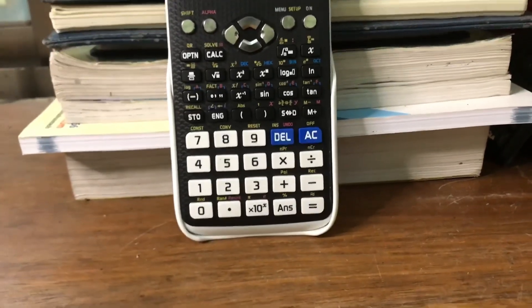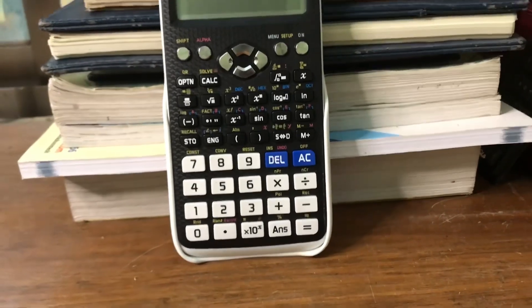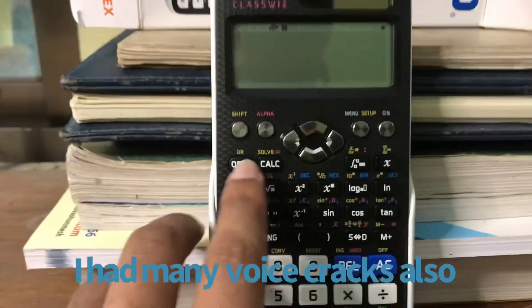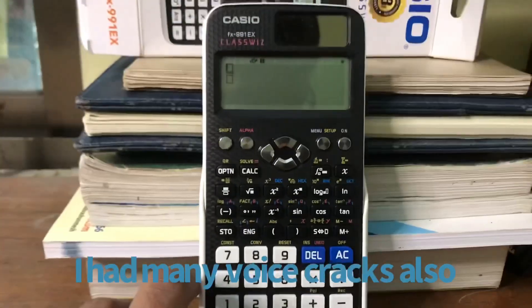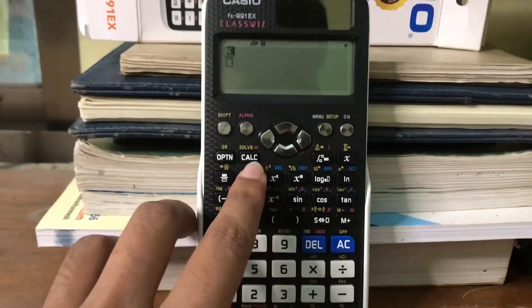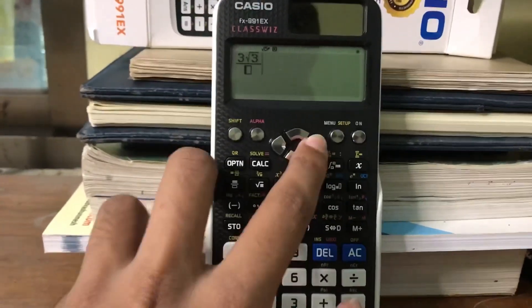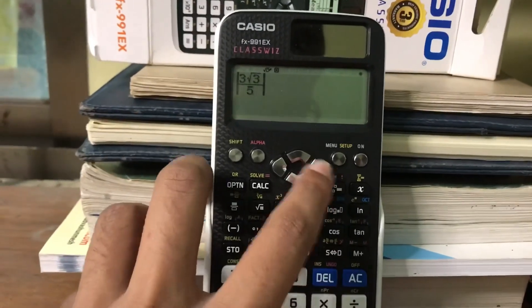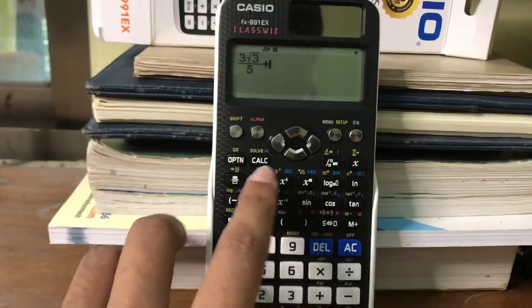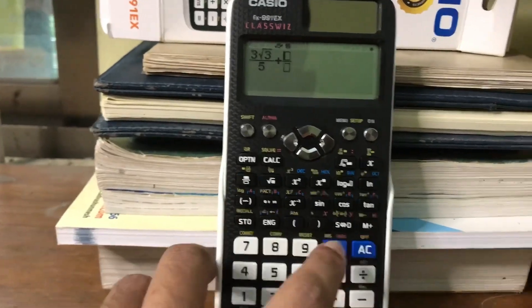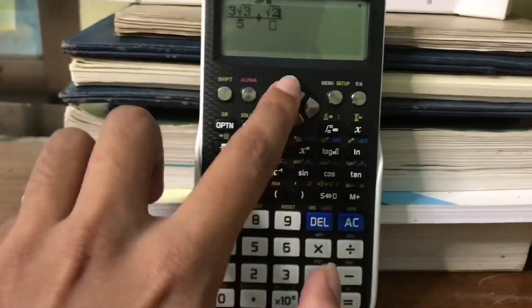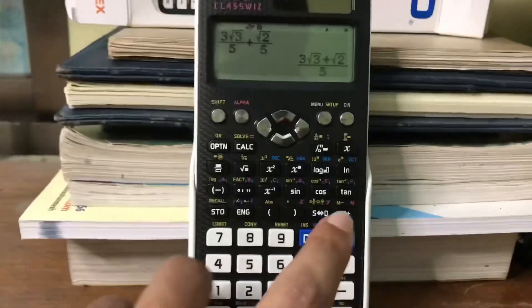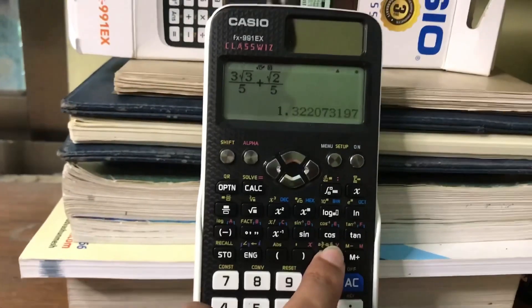List display function for quick learning. Variable and statistical calculation results stored in memory can be displayed in lists. There's no need to recall and confirm individual values as with previous models. Easy-to-understand English messages and interactive format. Nearly all English words are displayed on the screen. Interactive menu displays realize more intuitive operation.